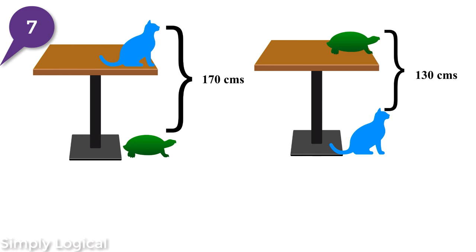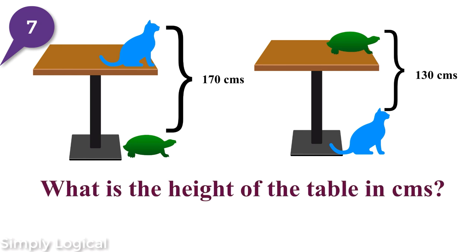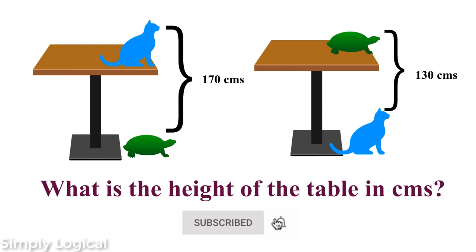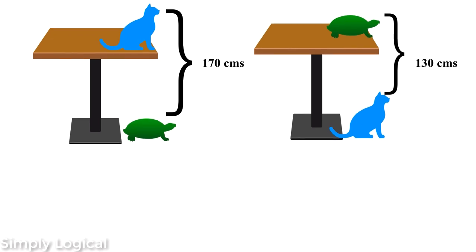Let's see if you can solve this one. Watch the diagram very carefully, use the clues available, and answer: what is the height of the table in centimeters? Whenever you come across such problems, try to solve them systematically instead of following blind methods. The most logical way is by creating equations. There are three important components in the diagram.